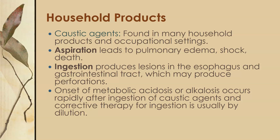Caustic agents are found in many household products and in occupational settings — they are harsh, burning chemicals. Aspiration leads to pulmonary and dermush shock and death, so breathing them in is dangerous. Ingestion will produce lesions and burns in the esophagus and gastrointestinal tract, which can cause perforations and massive bleeding. Onset of metabolic acidosis or alkalosis can occur rapidly after ingestion, depending on whether the agent is an acid or alkaline. Corrective therapy for ingestion is usually dilution of the chemical.